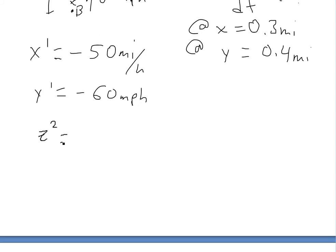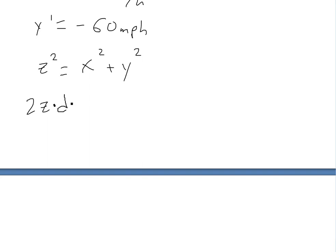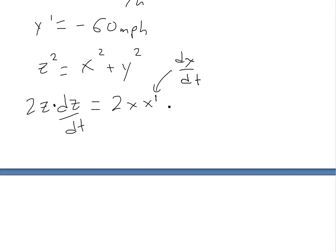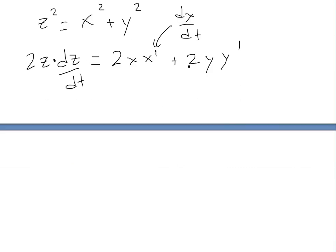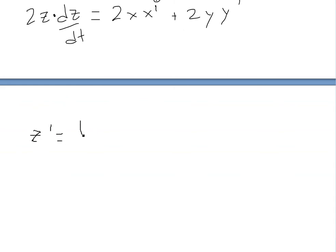Since this is a right triangle with legs going north and west and z as the hypotenuse, we have z squared equals x squared plus y squared. Using implicit differentiation and taking the derivative of both sides with respect to time, and applying the chain rule, we get: 2z(dz/dt) equals 2x(x prime) plus 2y(y prime). The 2s cancel, giving us z(z prime) equals x(x prime) plus y(y prime).